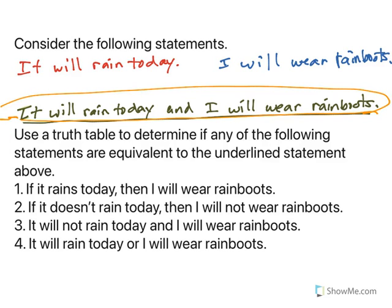Before we jump into our truth table, I want to put all of these into symbols, because sometimes that is just a little bit easier. So, it will rain today is going to be P, and I will wear rain boots is Q. So the statement that we are comparing to — it will rain today and I will wear rain boots — is P and Q.